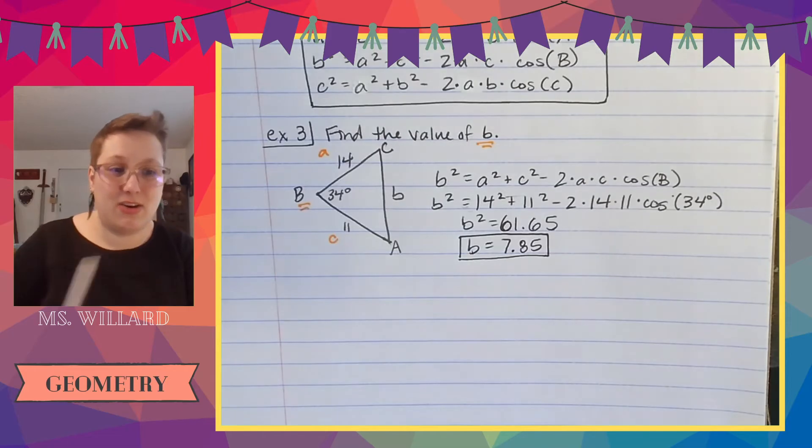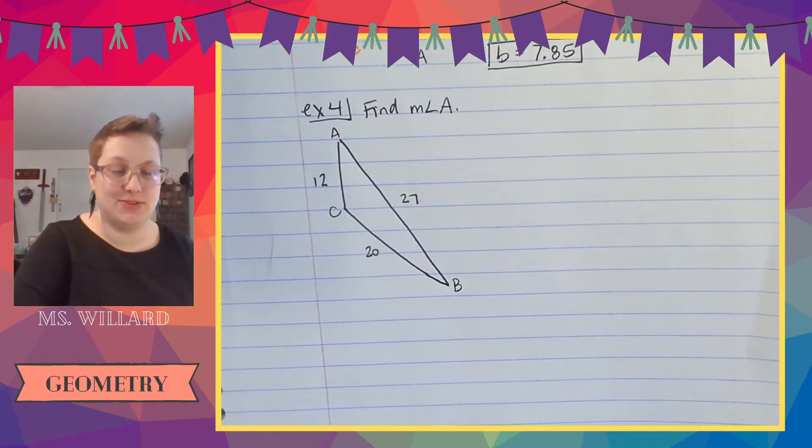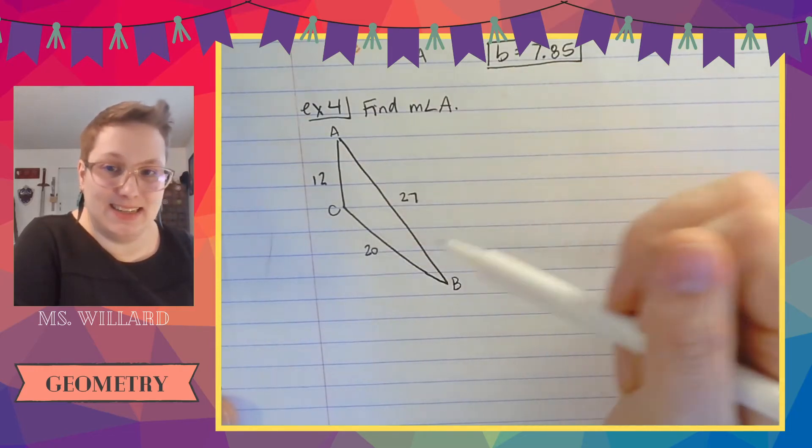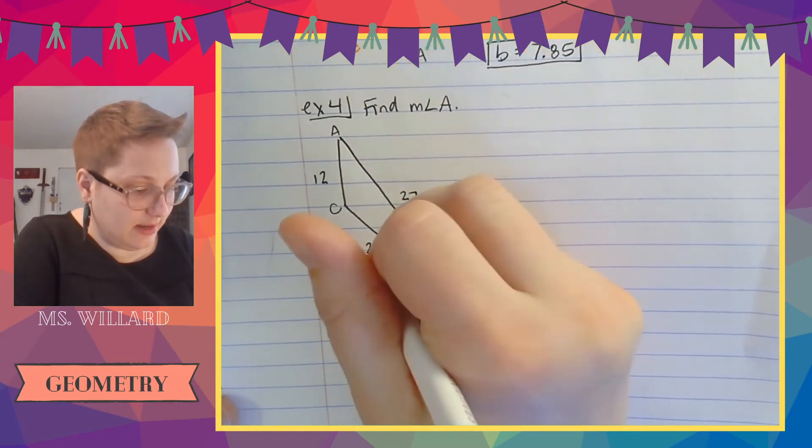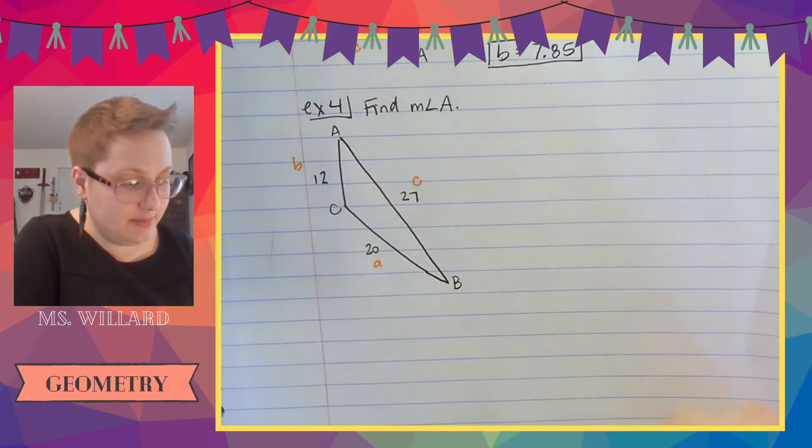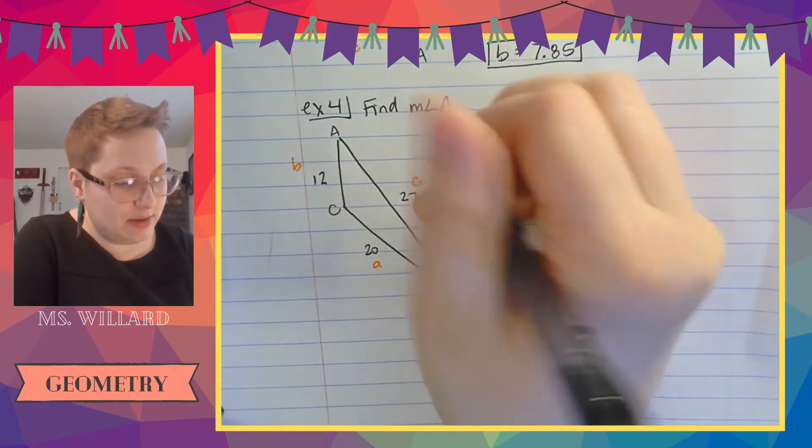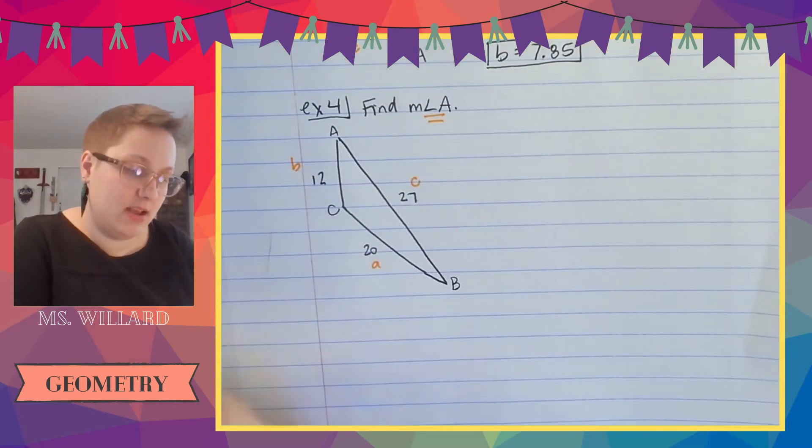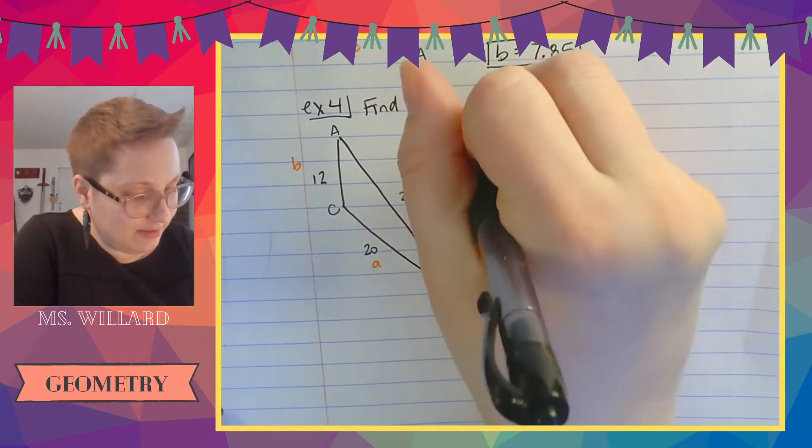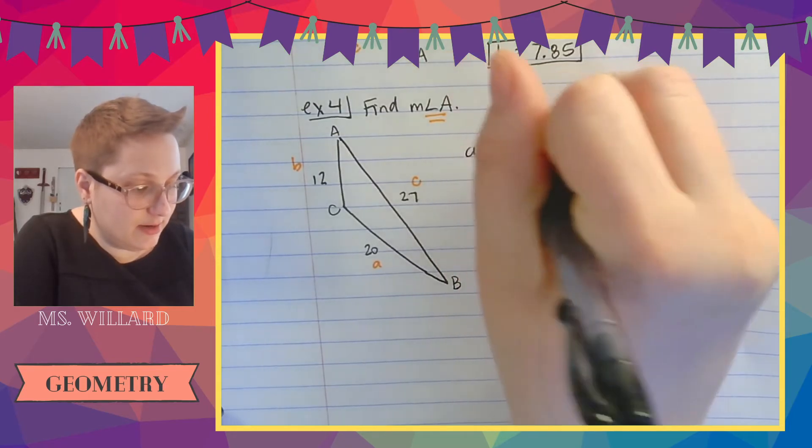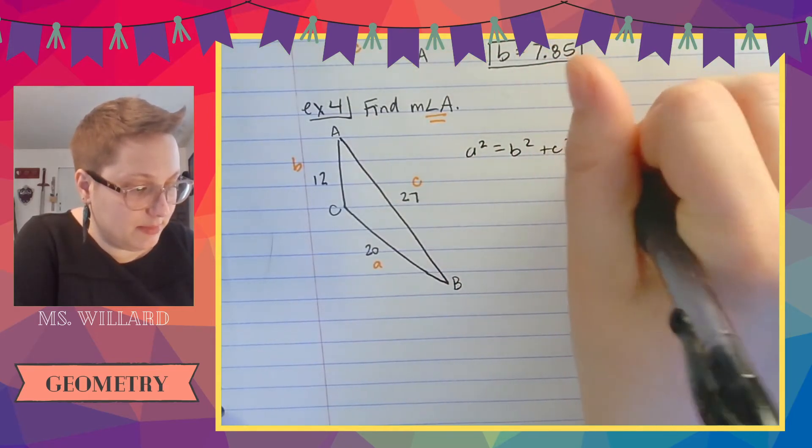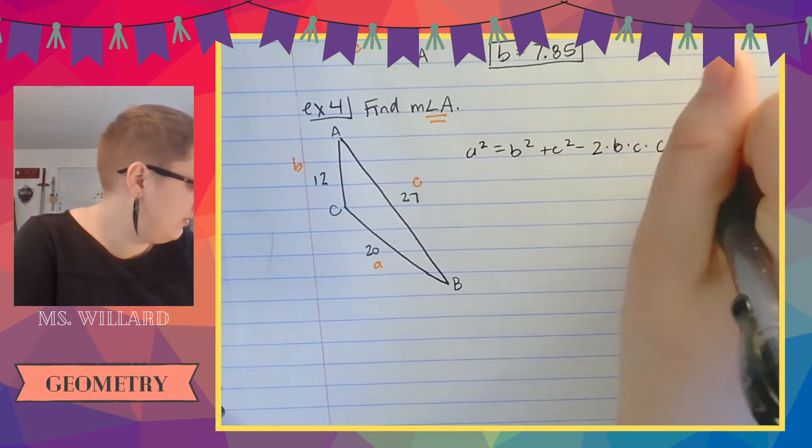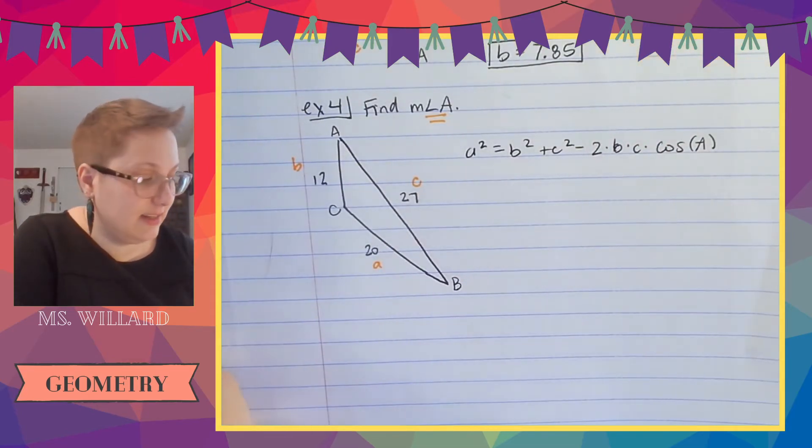Let's do another one. That's just slightly harder and then we'll be done. Okay. So we're going to find a measure of angle A. This is a side, side, side triangle. So this is little a, this is little b, this is little c. And because I want the measure of angle A, I'm going to use the A sandwich. Sorry about the train. Good gravy. Don't you dare.